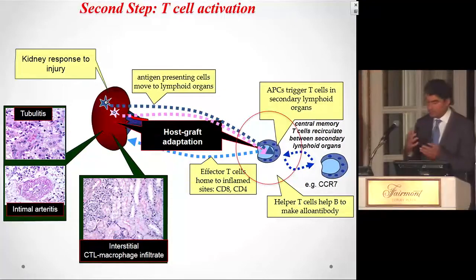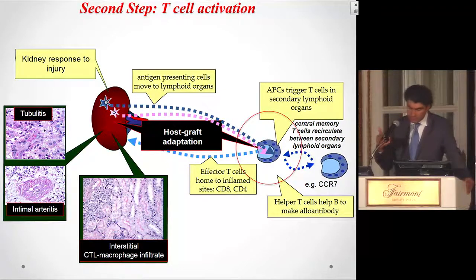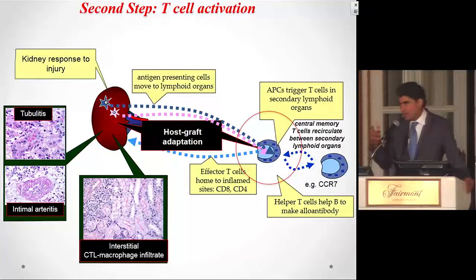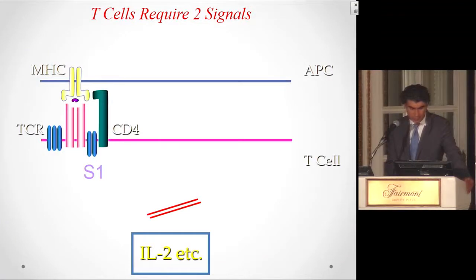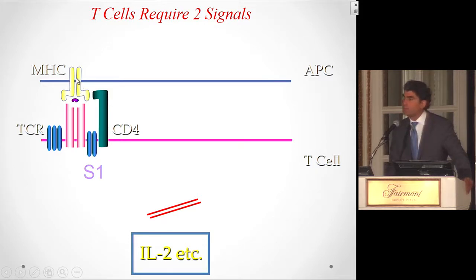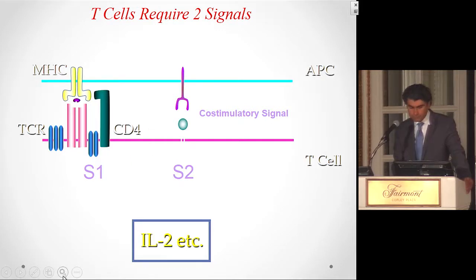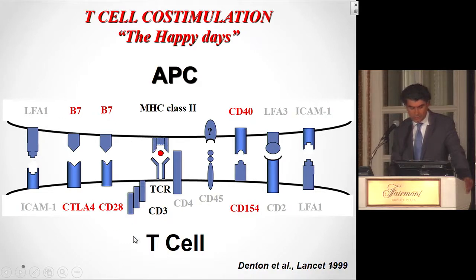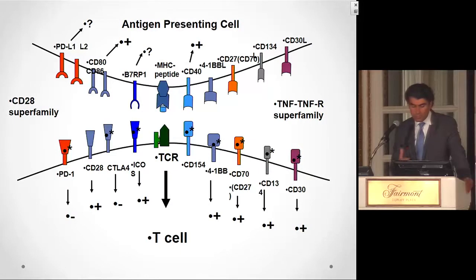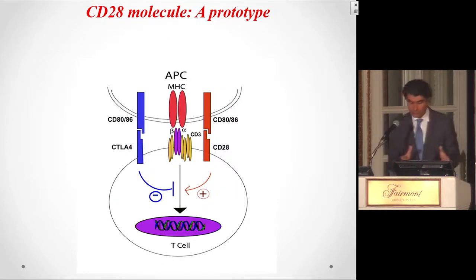Now, step two: how T cells get activated. If you understand this, you will remember the mechanism of action of all transplant medications forever. It starts when the T cell receptor recognizes an antigen on the MHC of the antigen-presenting cell — but nothing will happen with that signal alone. The cell always needs a second signal, provided by costimulatory molecules. The CD28 molecule is the prototype. A naive T cell expresses CD28 but not CTLA-4.